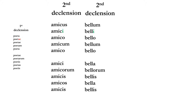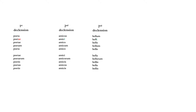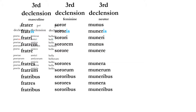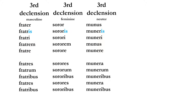Now for the third declension — this is not a complete presentation. All three genders are well represented here. If you pause and look carefully at the first two columns, you'll notice that masculine and feminine endings in the third declension are basically the same: 'frater, fratris' (brother, of the brother) and 'soror, sororis' (sister, of the sister). One is masculine and one is feminine, yet the endings are the same — which is why we don't simply combine them into one column the way we did with the second declension.